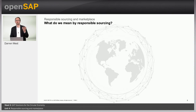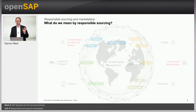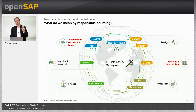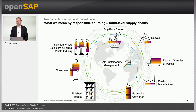Let's recap on what we mean by responsible sourcing from SAP. This covers both the tracking of materials post-consumer and how they are collected — for example via disassembly, reuse, or recycling operations — and then how they can be brought back in as new secondary materials. Supply chains in the circular economy are typically quite complex; they're ecosystems built up of many tiers with many different organizations involved.